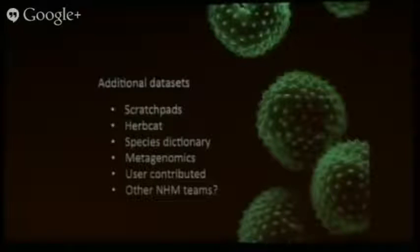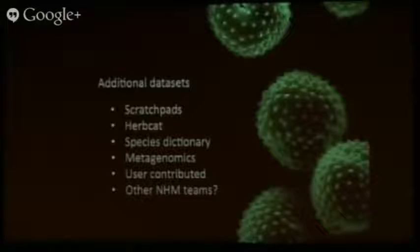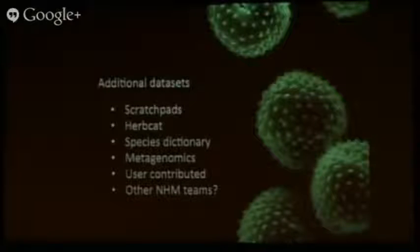In the second phase of the project, year two, we will open up the data portal so other data sets can be deposited — for example, from scratchpads, HerbCat, and the museum's library catalogue. We're also working with key data producers within the museum; for example, the metagenomics team can generate huge amounts of data which will be uploaded to the data portal and reused and researched worldwide. Individual researchers will also be able to contribute their data sets — just log in with your museum credentials, fill in the required metadata fields, and upload your data. Every single data set will have its own DOI and can be properly cited, so you're not losing control of the data you upload.